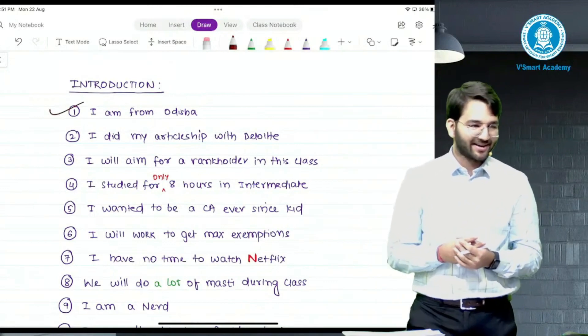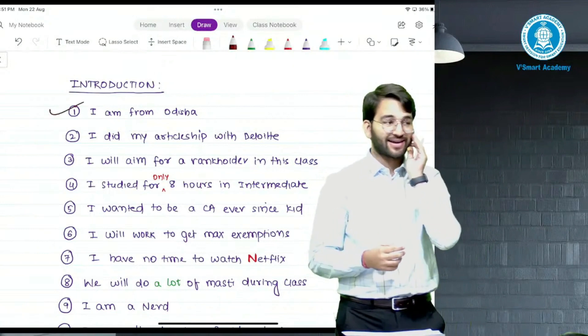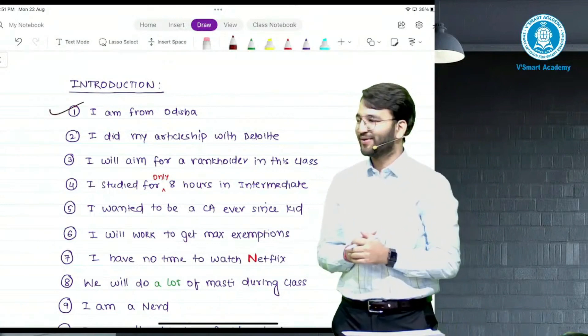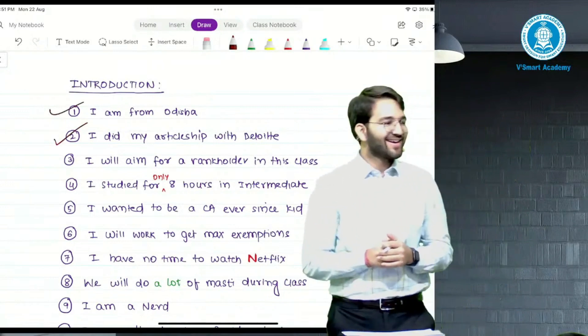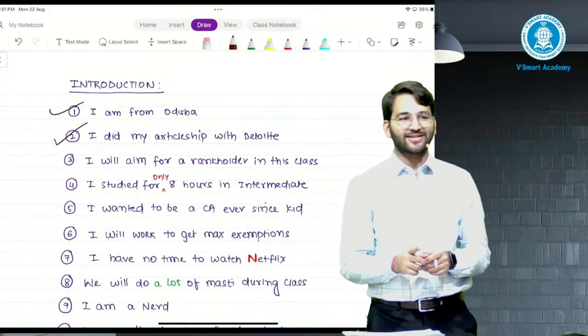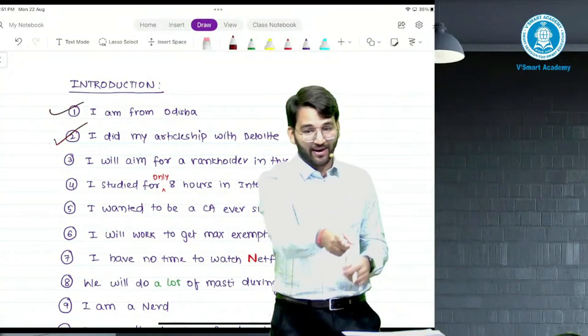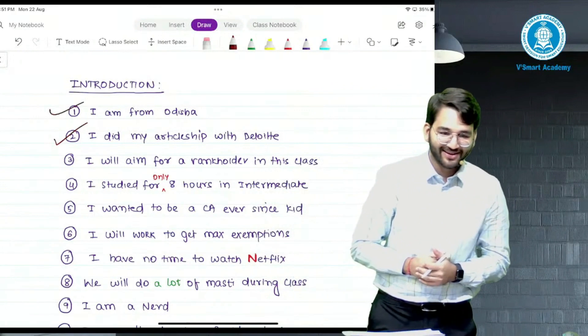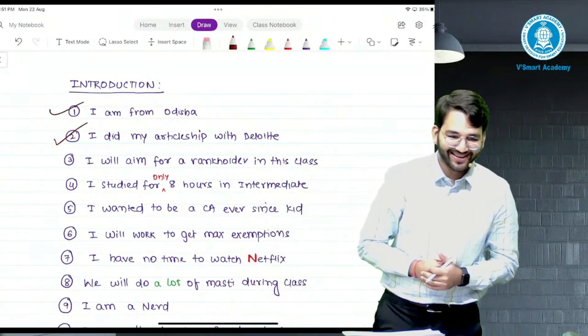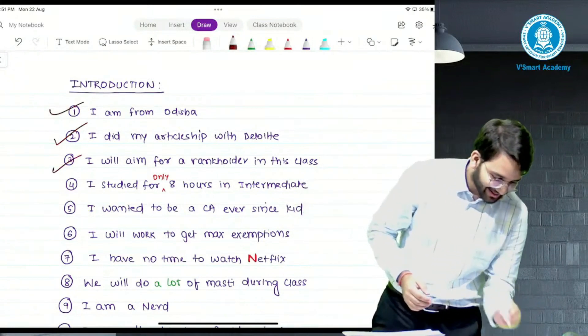Second, I did my articleship with Deloitte. Yes, I did my articleship with Deloitte. Deloitte is Big 4. You should know the 4 names - if you know names, you won't know the 4 firms. PwC, E&Y, and so on.